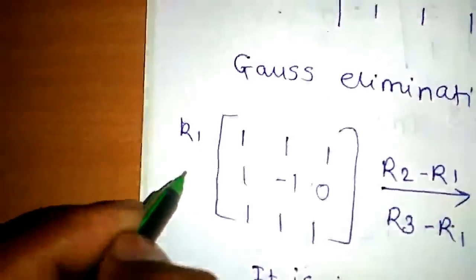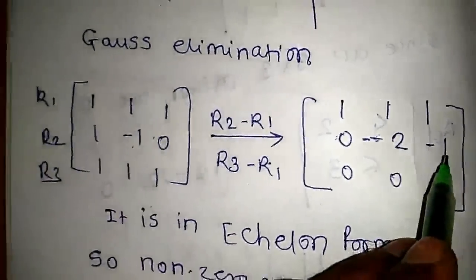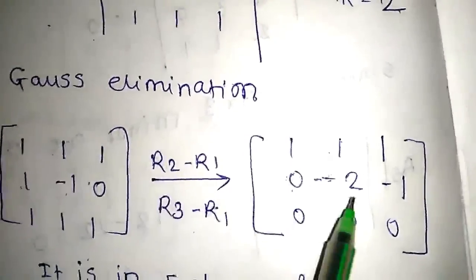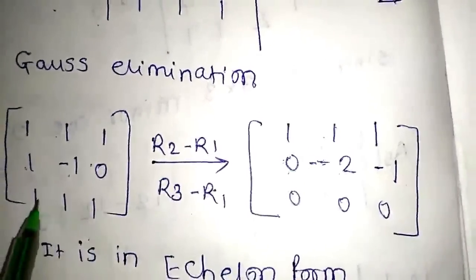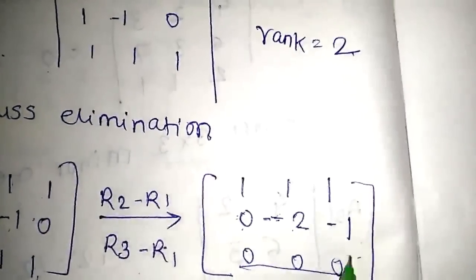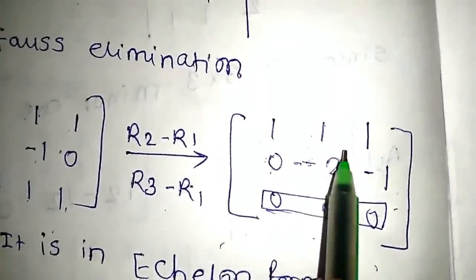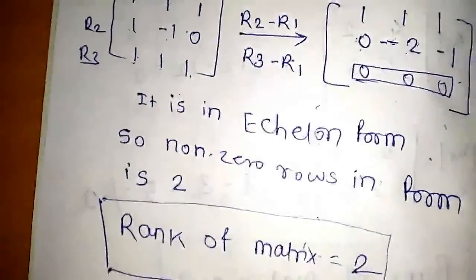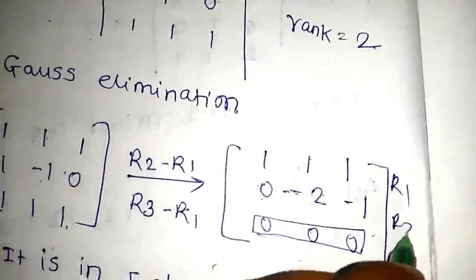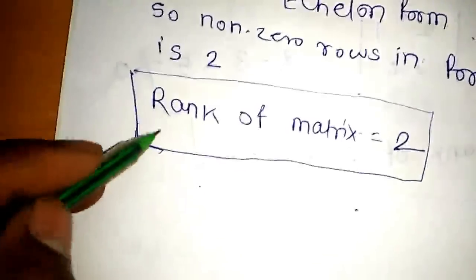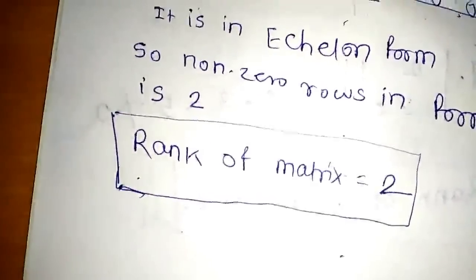R1 is written as 1, 1, 1. For R2 minus R1: 1−1=0, −1−1=−2, 0−1=−1. For R3 minus R1: 1−1=0, 1−1=0, 1−1=0. So the third row becomes all zeros. The non-zero rows are R1 and R2. This is now in echelon form, and we count the non-zero rows. The rank of the matrix is equal to 2.